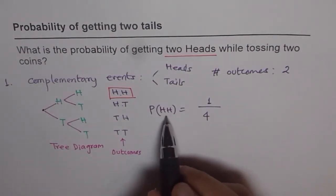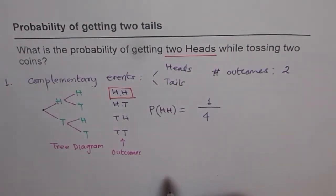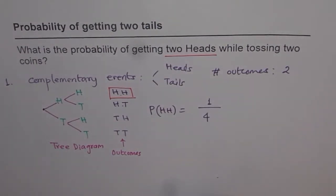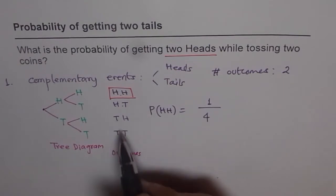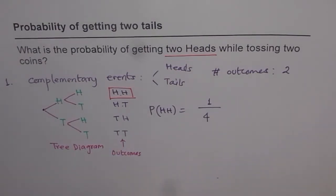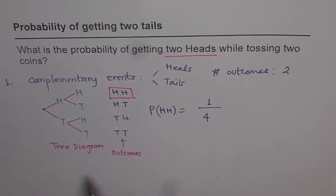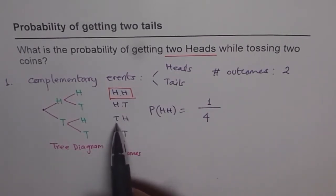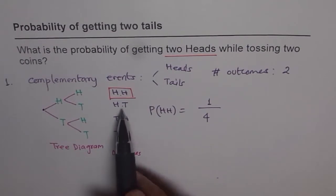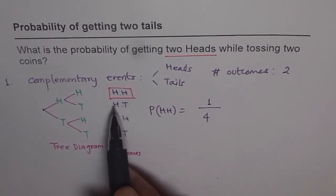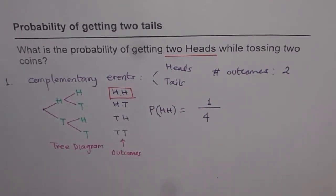So probability of getting two heads is one over four. As an exercise, you can find the probability of getting two tails — that is also one out of four. And the probability of getting head and a tail is two out of four, which is one half.